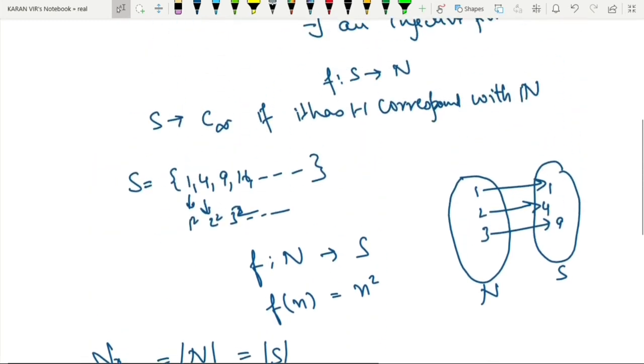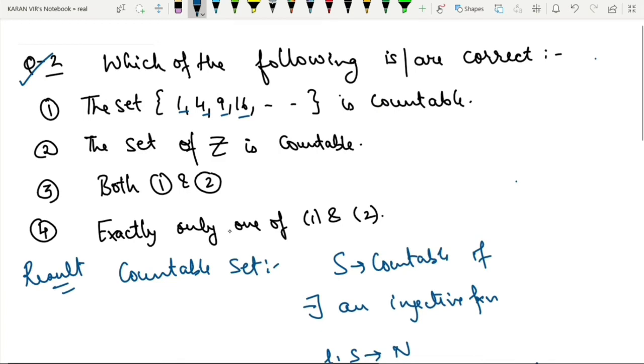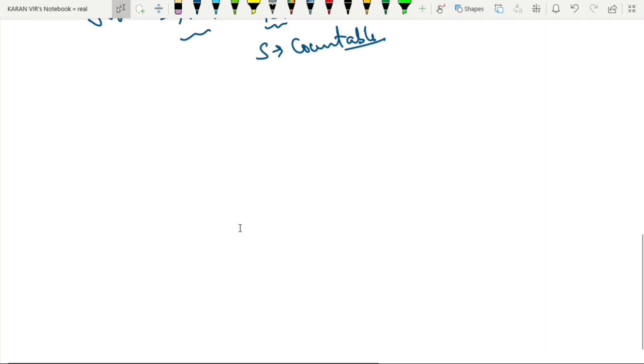Now, because we have seen the definition of countability, we have shown one-to-one correspondence also, so the set is countable. So the first option is correct. Now the set of integers. Now we will try to define a map to the integers.